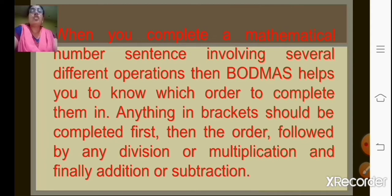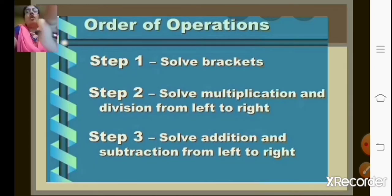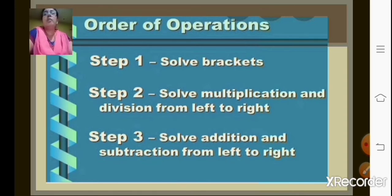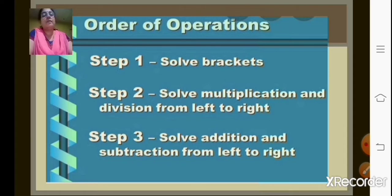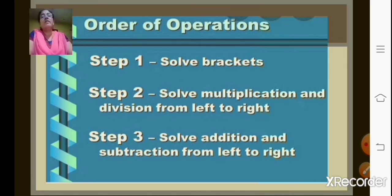Anything in brackets should be completed first, then division or multiplication, and finally addition and subtraction. So the order of operations is: first, solve the brackets. Second, do multiplication or division from left to right. Then solve addition or subtraction, again starting from left to right. So we solve brackets first, then multiplication and division whichever comes from left to right, then addition or subtraction from left to right.